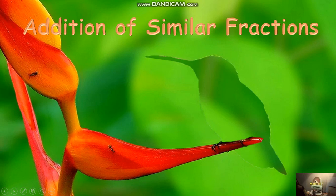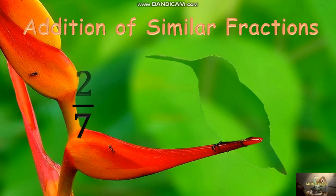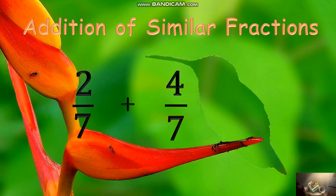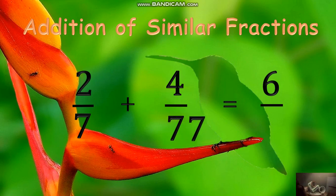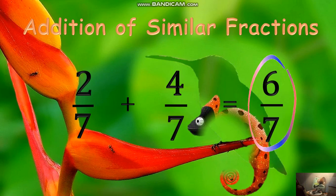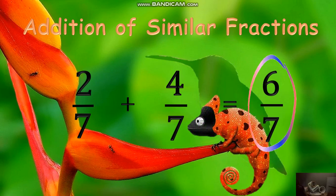We already discussed this lesson in our previous videos. We have 2 sevenths plus 4 sevenths. To add similar fractions, add only the numerators: 2 plus 4 equals 6, and copy the common denominator 7. Therefore, the correct answer is 6 sevenths. Don't forget to reduce your answer to the lowest term if needed.